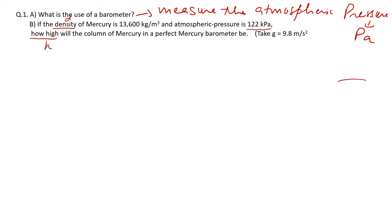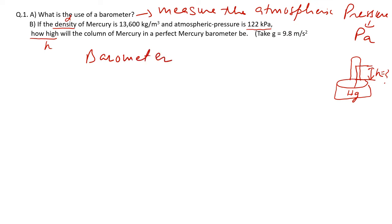The diagram shows a barometer vessel with a glass tube containing mercury. The mercury rises up in the tube, and we need to find how high the mercury will go — that is the height h. The formula for barometer pressure is P = hdg, where h is the height of mercury, d is the density of mercury.